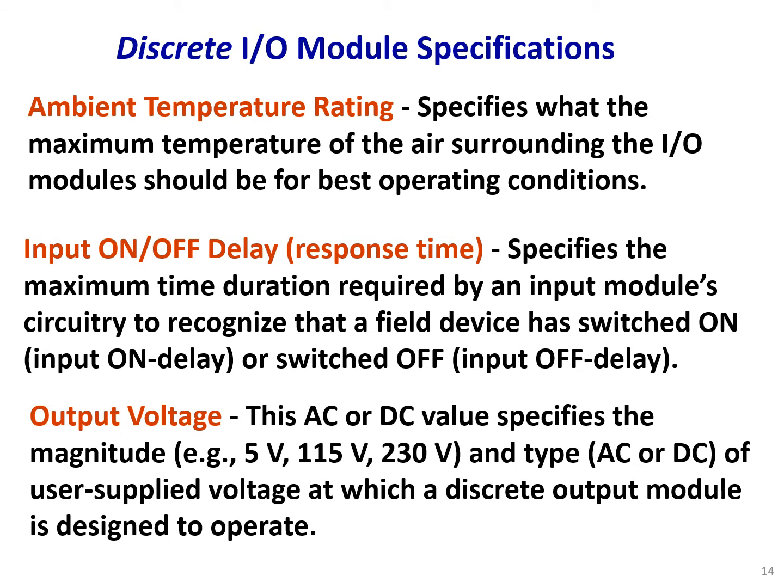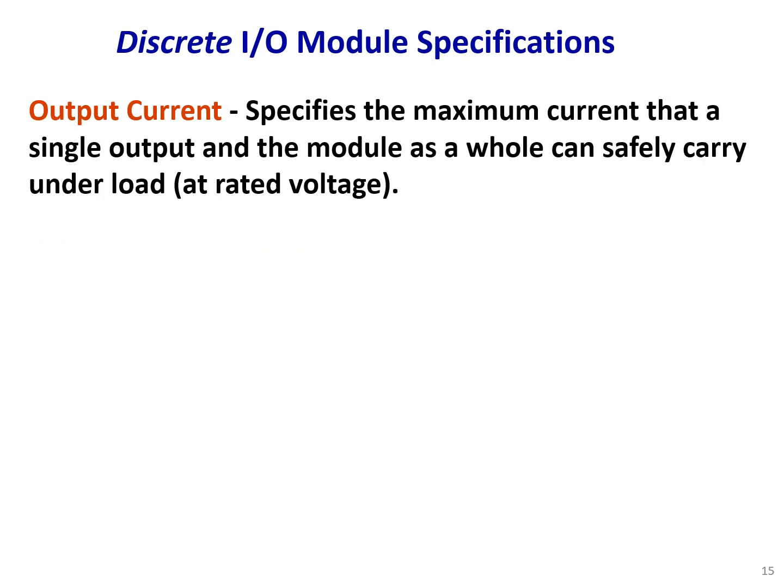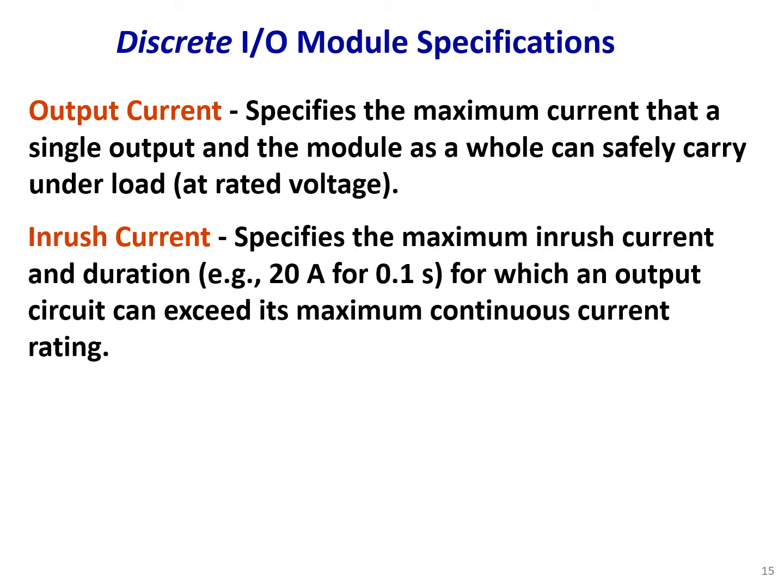The output voltage — AC or DC — specifies the magnitude, for example 5, 115, or 230 volts, and type of user supply voltage at which a discrete output module is designed to operate. Output current specifies the maximum current that the signal output and the module as a whole can safely carry under load. Inrush current specifies the maximum inrush current and duration — for example, 20 amperes for 0.1 seconds — for which an output circuit can exceed its maximum continuous current rating.